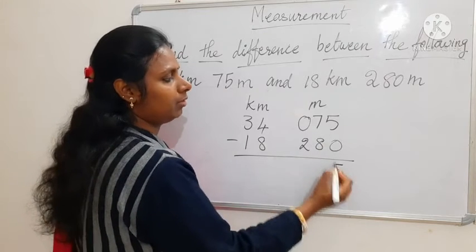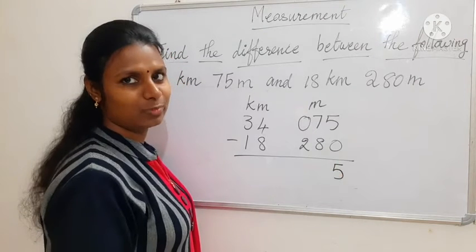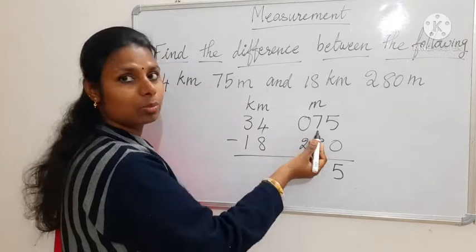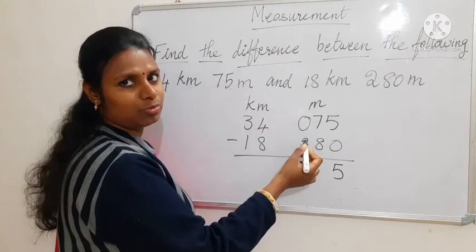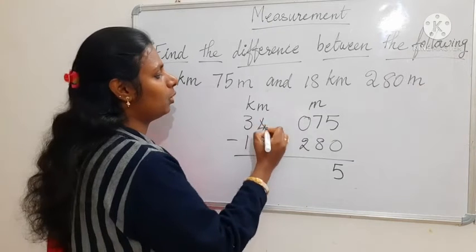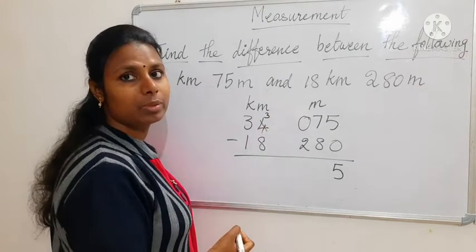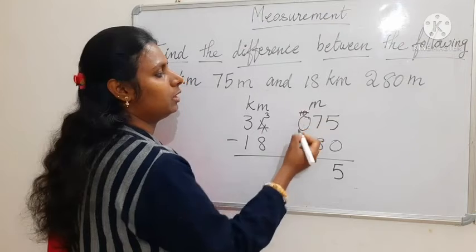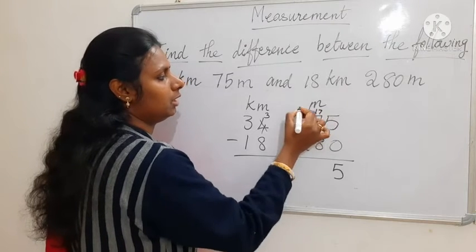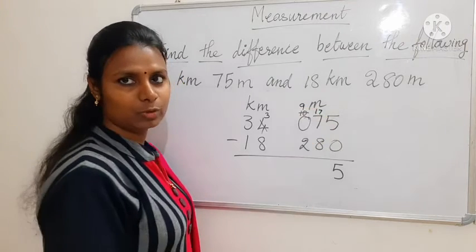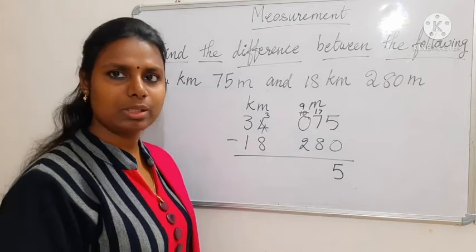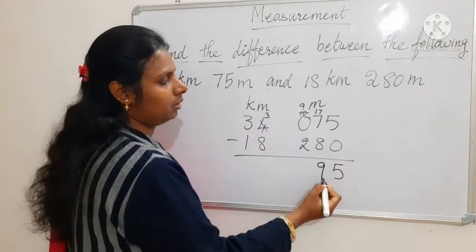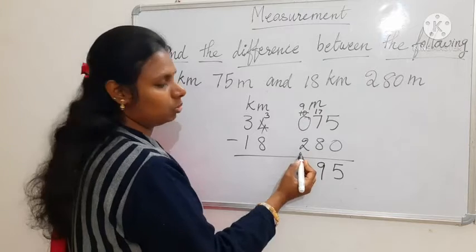5 minus 0 is 5. Then 7 minus 8 — we cannot subtract, so we have to borrow. From here we cannot borrow, so we borrow from further along. When we borrow, this becomes 3 and here 10, and from here when we borrow it comes 17, and here 9. So 17 minus 8 is 9. Then 9 minus 2 is 7.